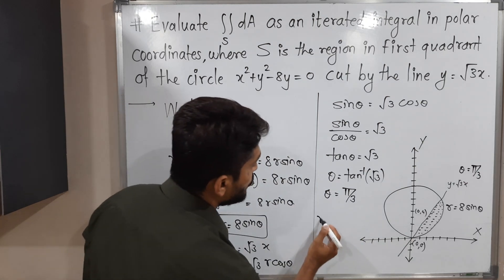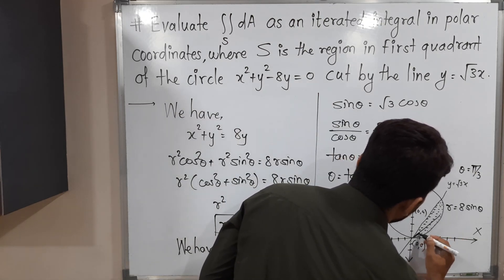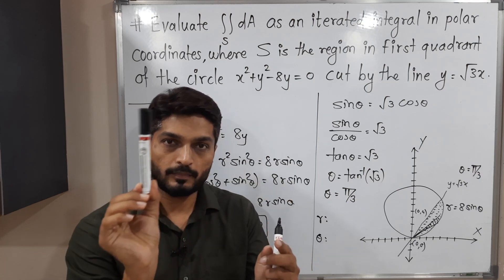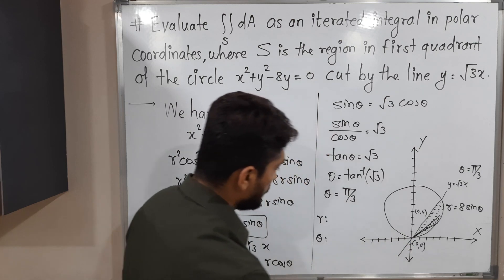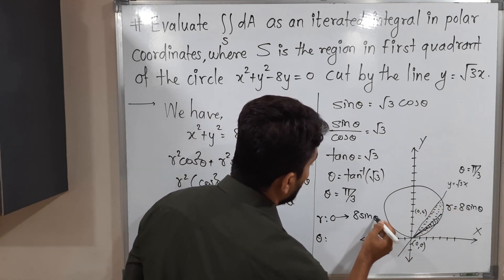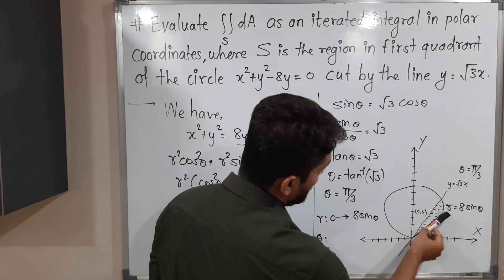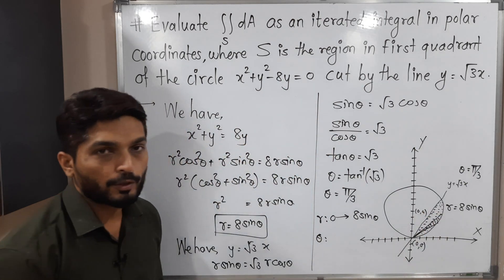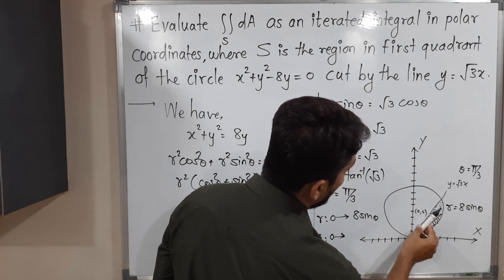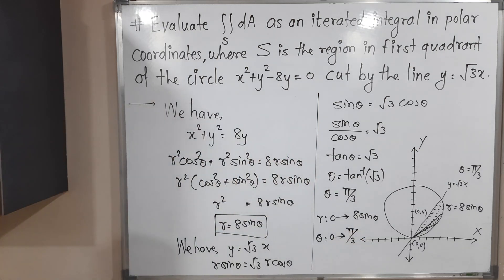Now it is very easy to find the limits. In polar coordinates, we always draw a strip with one end fixed at the origin. The strip is bounded below by r = 0 and above by the circle r = 8 sinθ. For theta, the strip starts at θ = 0 and rotates up to the line θ = π/3 to cover every point of that region. So limits of r are 0 to 8 sinθ, and limits of θ are 0 to π/3.